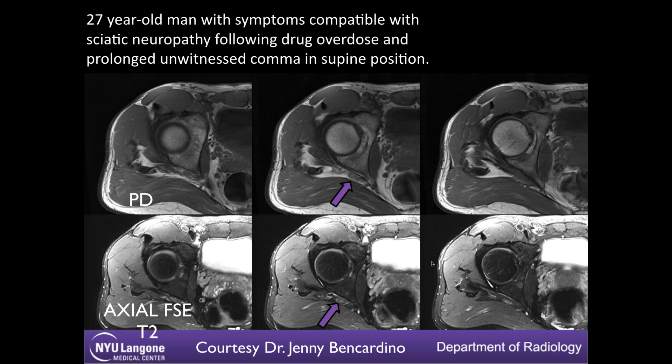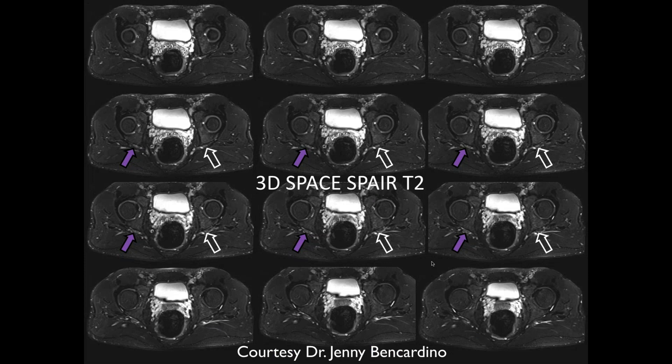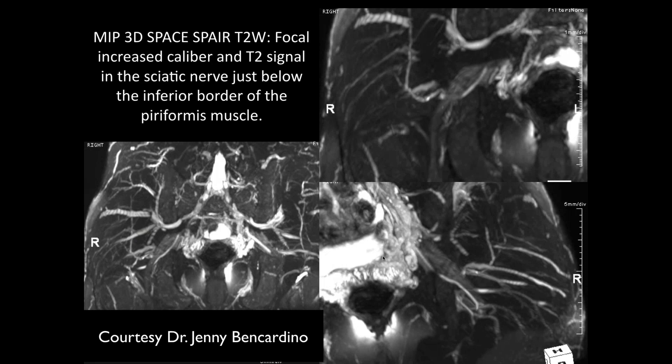Next case: 27-year-old man with symptoms compatible with sciatic neuropathy following drug overdose and prolonged unwitnessed coma in supine position. We have PD and axial images here. The arrow is pointing to what appears to be a thickened, edematous sciatic nerve. On a larger field of view, the arrow is showing the sciatic nerve which is a little more thick and hyperintense than on the other side. On the MIP 3D SPACE T2, there is increased caliber and T2 signal on the sciatic nerve — asymmetrically enlarged and thickened.